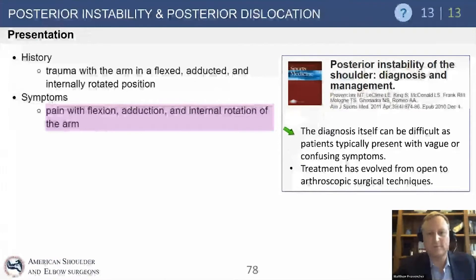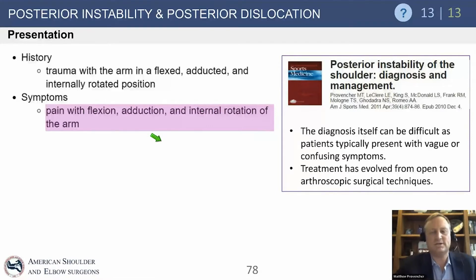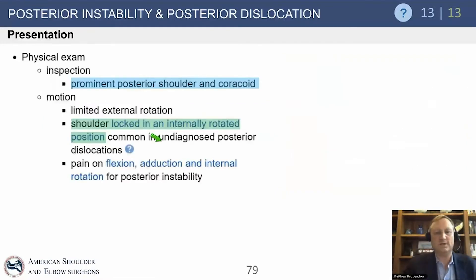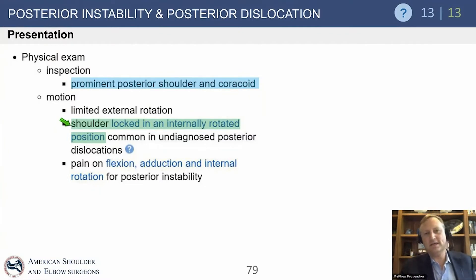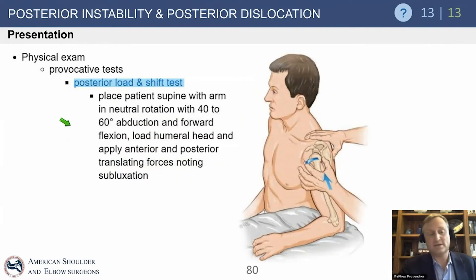Reviewing a large series — including military personnel who bench-press heavily and football players — these patients demonstrate pain with flexion, adduction, and internal rotation. Examination reveals a prominent posterior shoulder and coracoid, especially if subluxed. If dislocated, the key finding is that the shoulder is locked in internal rotation — they come in wearing a sling and appear fine. This is why posterior dislocation is the number one shoulder missed diagnosis in the emergency department.